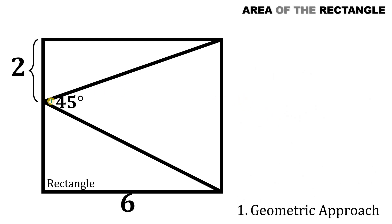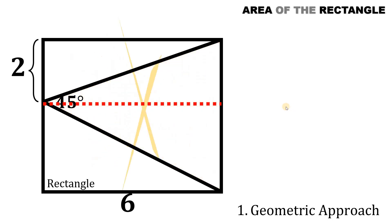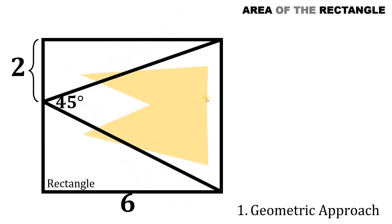To start, let's draw a perpendicular line exactly at this vertex. Now let's color this triangle. Take note: this part and this part are equal. Therefore, we can say that the area of this triangle is simply half the area of this rectangle, and we will use that fact to answer this question.